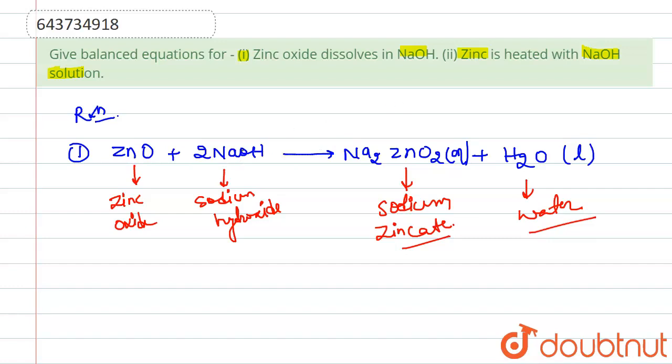Now if we talk about our second one which is saying zinc is heated with NaOH solution. So we have zinc, Zn in solid. Zinc is added to NaOH, this is sodium hydroxide. When it is heated